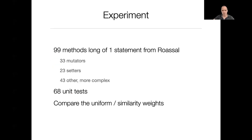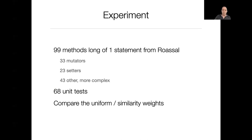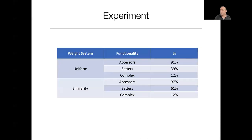As an experiment, we took the Roassal application and picked 99 methods with exactly one statement. These methods were categorized as accessors, setters, and complex methods — where complex means not an accessor or setter. We used 68 unit tests. Comparing uniform vs. similarity weights, our approach works particularly well for accessors: both uniform and similarity give over 90% precision. For setters, we also have relatively good results, particularly with similarity.